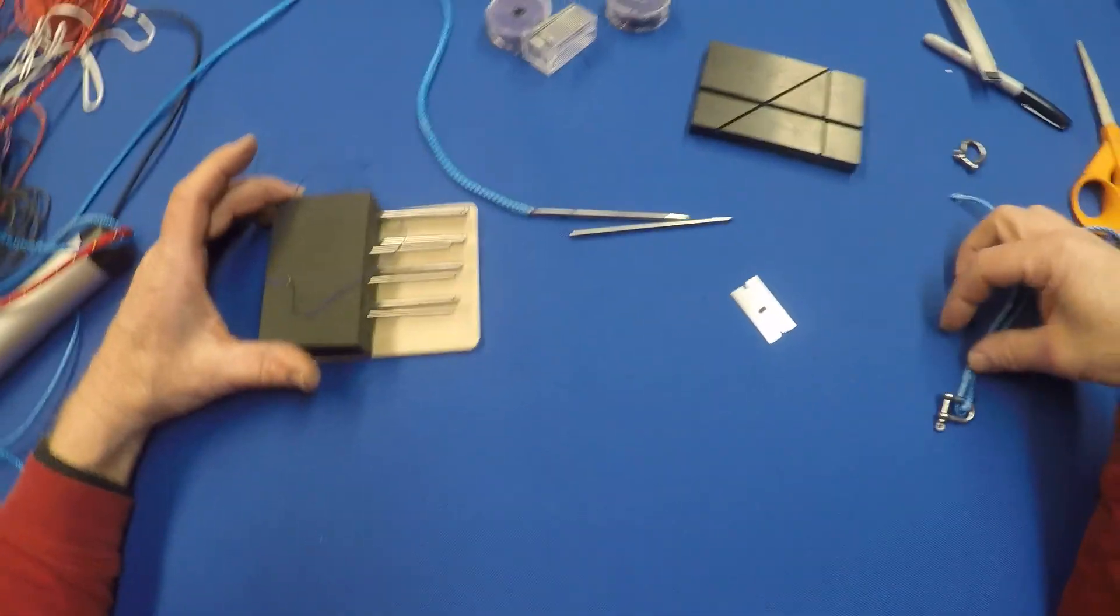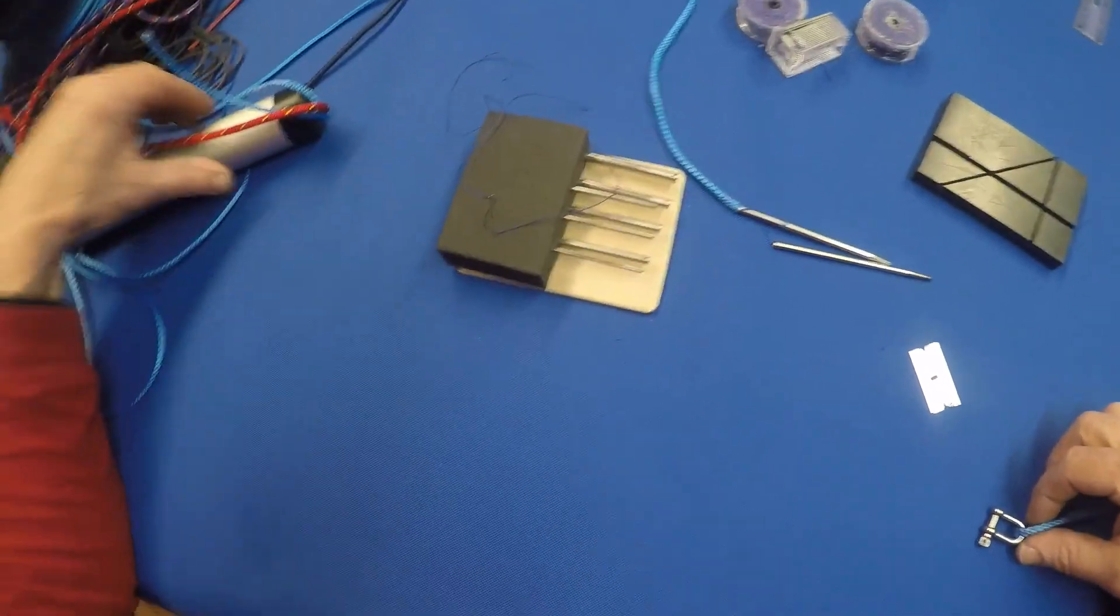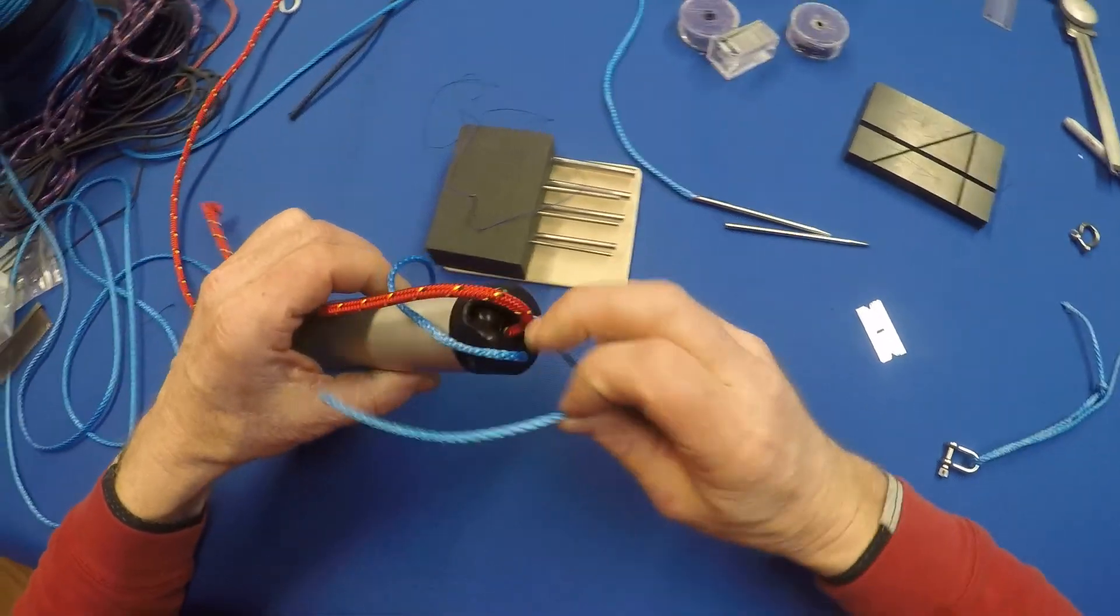Okay, let's look at making an adjustable bridle now for the front of your spinnaker pole. So let's say this is the front of your spinnaker pole.